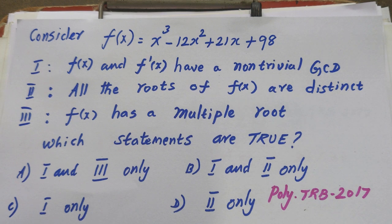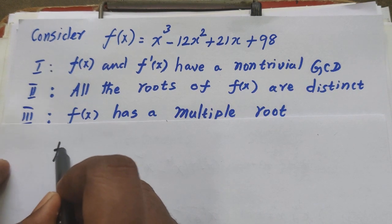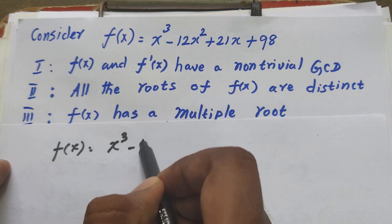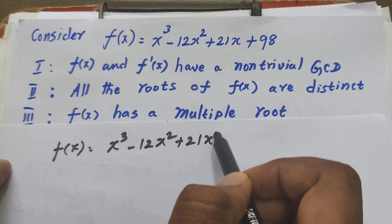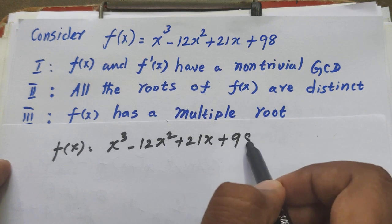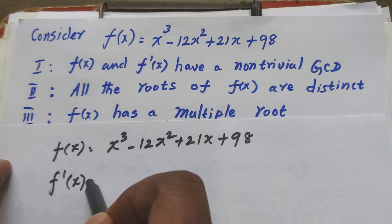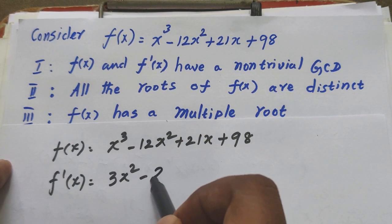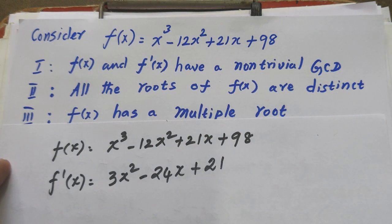First, we are given f of x equals x cubed minus 12x squared plus 21x plus 98. Now let us find f dash of x by differentiation. The derivative f dash of x equals 3x squared minus 24x plus 21.